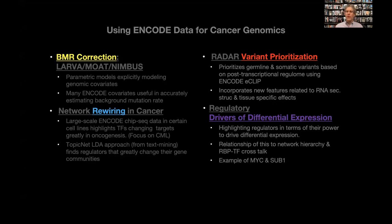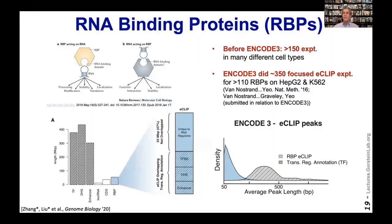The next topic is variant prioritization. People are always using ENCODE data to prioritize variants. I'm going to focus on one particular type of data that's new in ENCODE: RNA binding proteins. Before the last ENCODE release there wasn't much data, but now there's quite a bit from the eCLIP experiments. Two useful things: eCLIP experiments cover a large fraction of genomic real estate — actually more than CDS — and the binding sites are much more precise than TF binding sites.